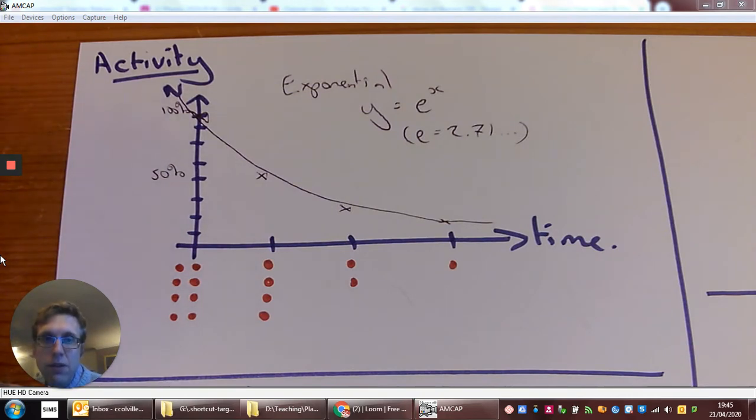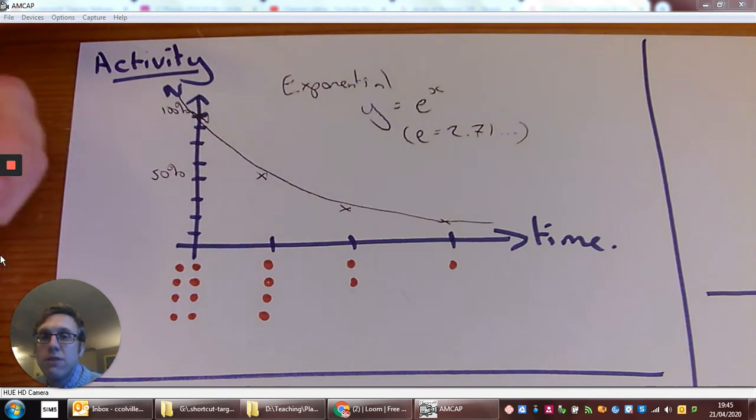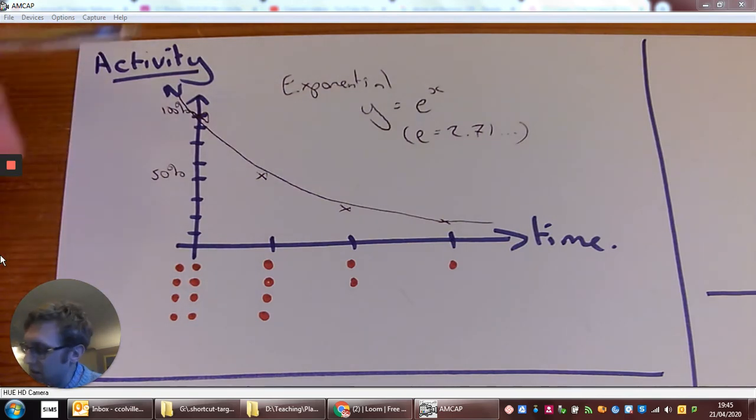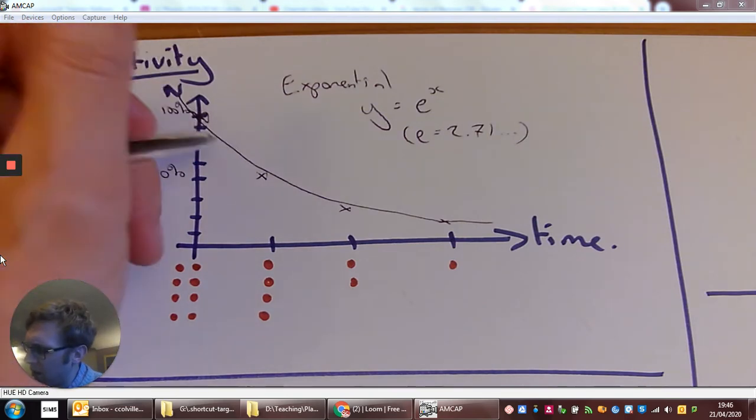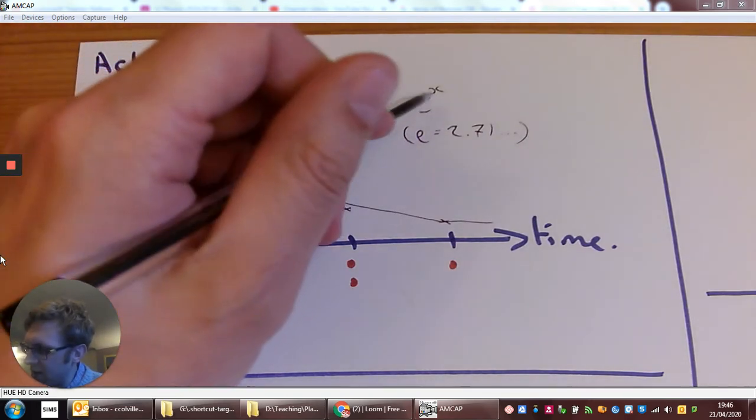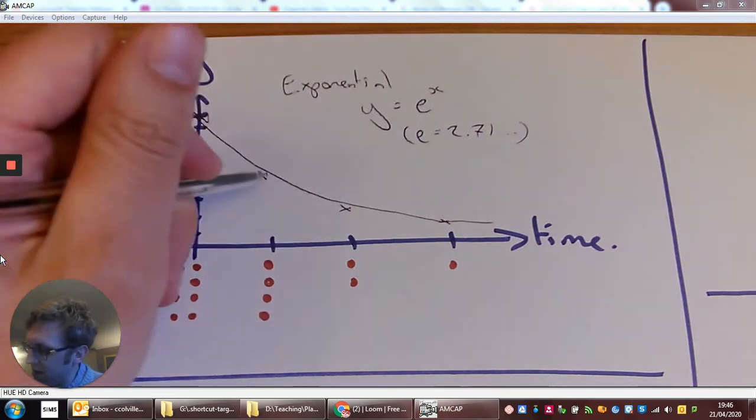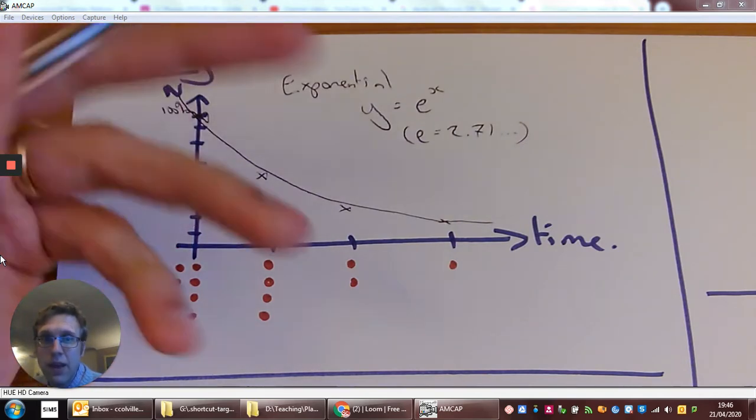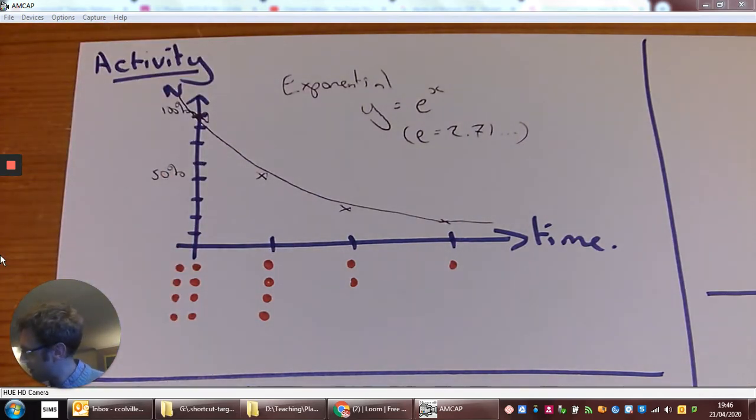The number that goes on forever just like pi does. Why this is a really interesting number and a really interesting function in physics is it seems to underpin a lot of what happens in the universe. Why we like it is the gradient of this graph is the same as the y value at every point of this graph. That lets us do some really interesting things in terms of the mathematics.